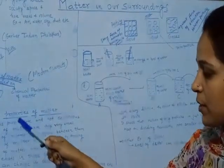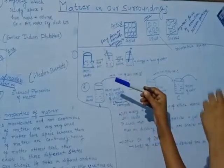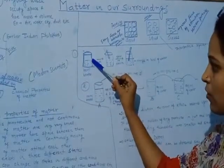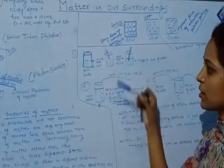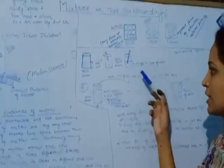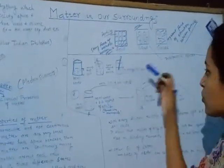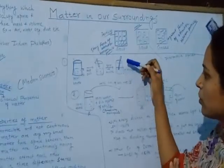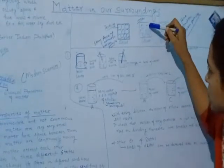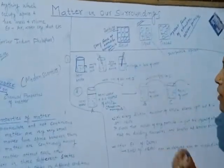Matter is made up of particles, and we can prove it by example. We take a 100 ml beaker, fill it half with water, and mark the water level. We add some salt particles and stir continuously. After some time, the salt particles disappear in the solution, and there is no change in the water level. This is because the solid salt particles get into the vacant spaces between the water particles, so the volume remains the same.